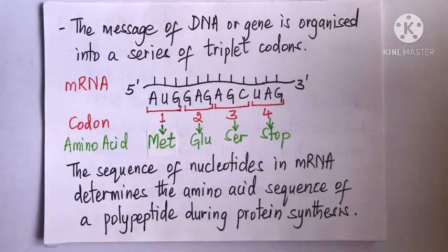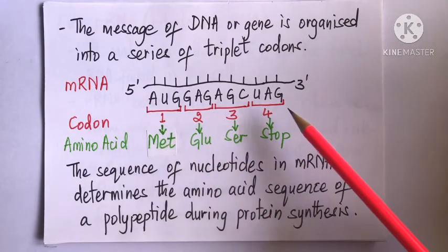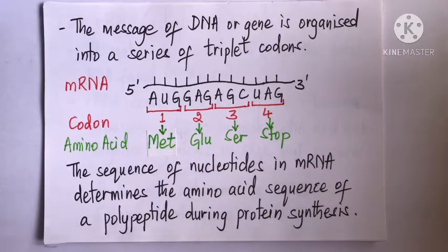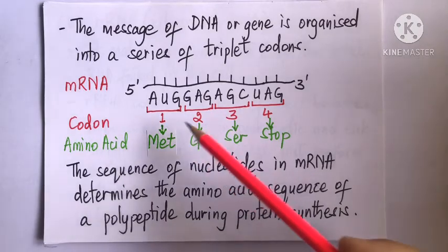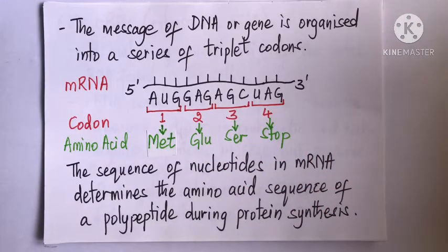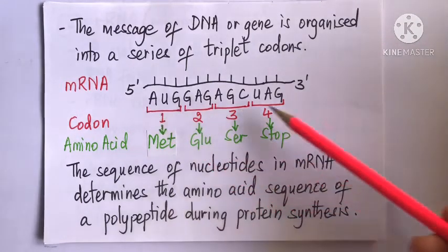The genetic message of DNA is organized into a series of triplet codons in mRNA. For example, in this 12-lettered mRNA sequence, the letters are to be read continuously in groups of three with no overlapping. As a result, this 12-lettered mRNA sequence will give rise to four codons. By using the genetic code table, we can predict the amino acid sequence specified by this mRNA strand.